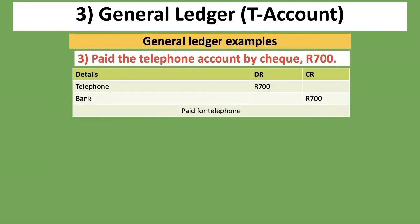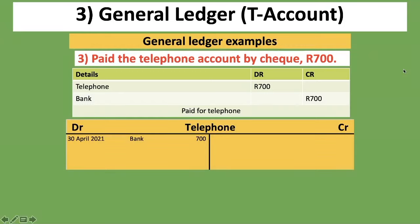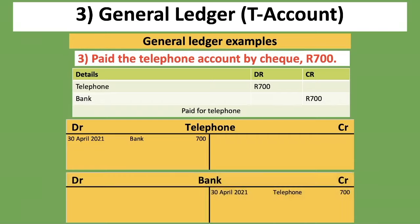The third transaction: we paid the telephone account by check, 700 rand. The two accounts are telephone — an expense that increases on the debit side — and bank, an asset decreasing on the credit side. For the telephone expense T-account, put the date on the debit side, detail as bank, and amount 700 rand. For the bank T-account, bank is on the credit side because we're paying out money, so put the date on the credit side, detail as telephone, and amount 700 rand.